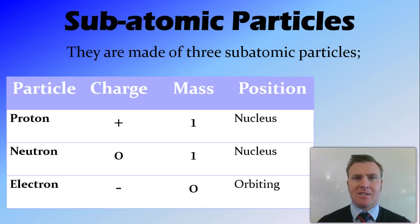They're made up of three different subatomic particles. We have protons. Protons have a charge of one positive, they have a mass of one, and they are found inside the nucleus. Neutrons are neutral, so they have a charge of zero. They again have a mass of one and are found inside the nucleus.